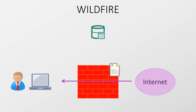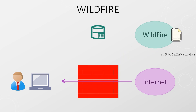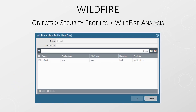Wildfire is Palo Alto's secure cloud-based sandbox environment that's used to check unknown files and email links for threats. These files and links are sent to the cloud to be scanned. A result of malicious, greyware, benign, or phishing is then sent back to the firewall. Signatures are created for malicious and phishing traffic, so other firewalls can block these files quickly. The default Wildfire security profile is suitable in most cases; however, sometimes you might want to configure additional profiles to better handle traffic between trusted zones.